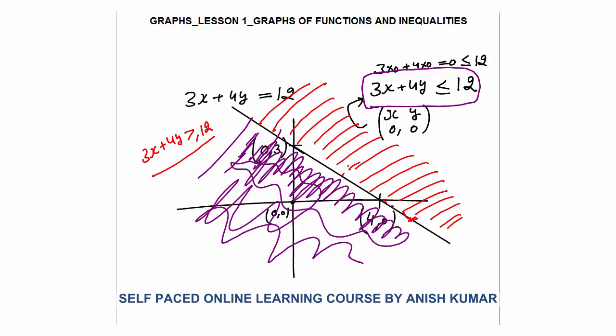Either the area will be below the line or above the line. The best approach is to check by putting x equals 0 and y equals 0. If origin satisfies, you get one area; otherwise, it will be the other area. That was all about this lesson. Thank you.